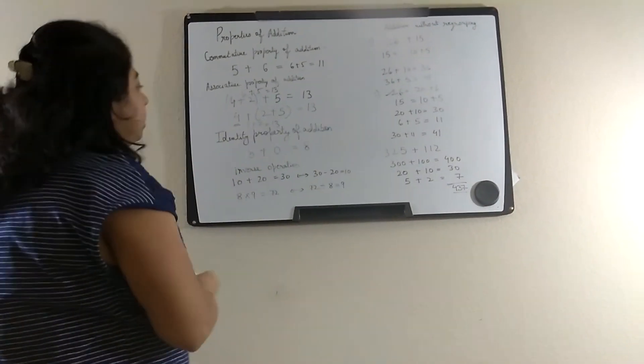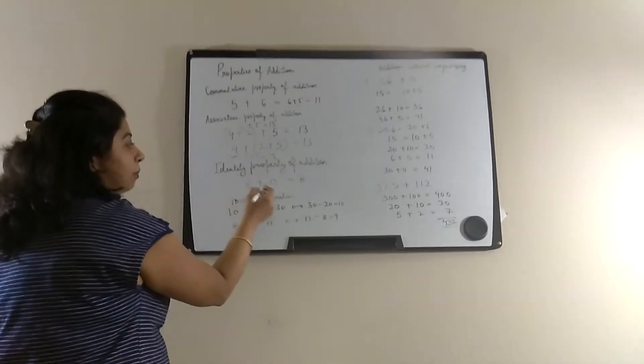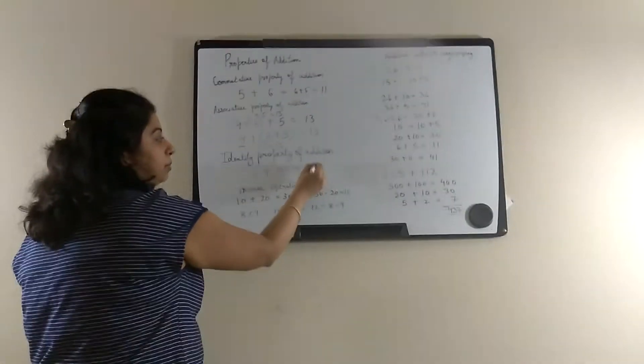Next is the identity property of addition. If we add any number to 0, the number remains the same.